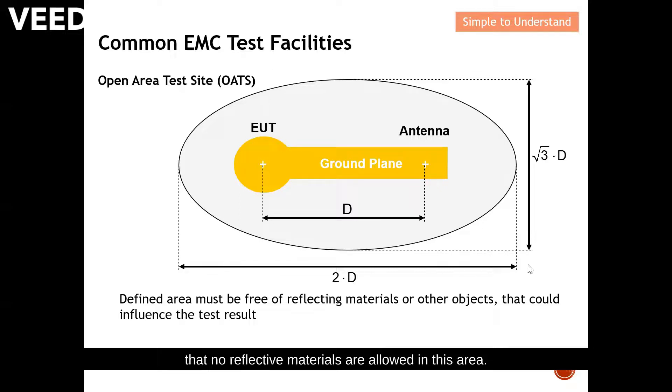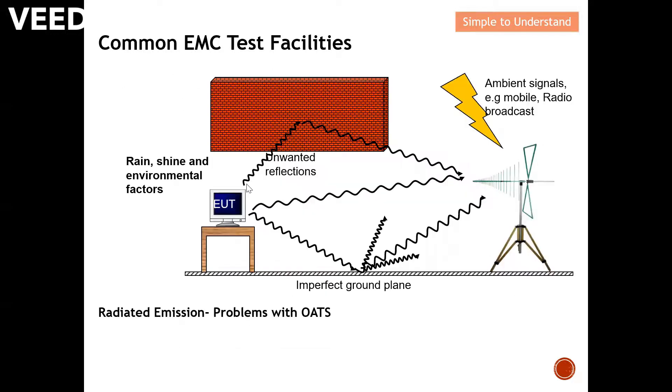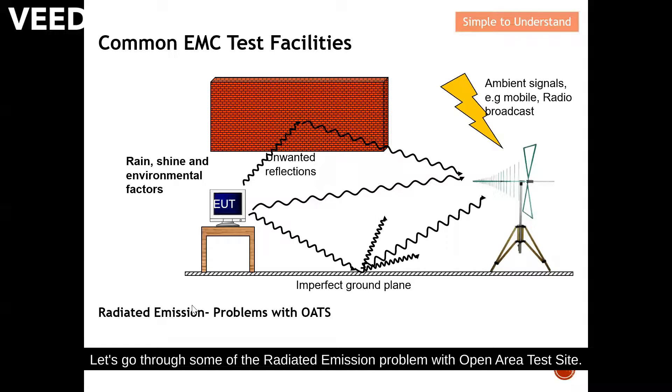Let's go through some of the radiated emission problems with open area test sites. For example, this is your DUT. It may hit the wall and the measurement actually conducted at the antenna. This is also visible. The DUT RF signal actually hits the ground because this ground is a conductive material and some of them actually reflected back to the antenna. The only signal that we want to measure is this direct from the DUT to the antenna.